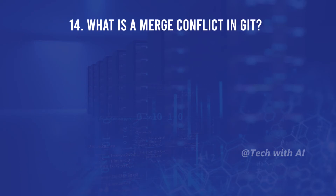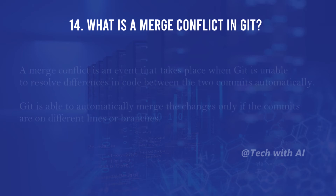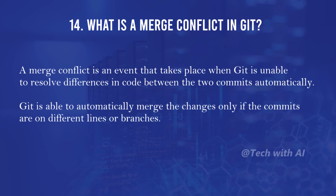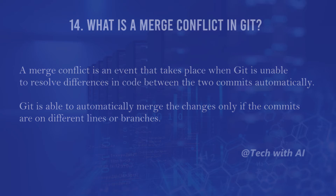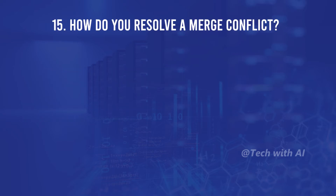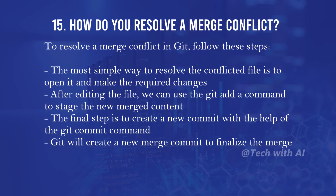What is a merge conflict in Git? A merge conflict is an event that takes place when Git is unable to resolve differences in code between two commits automatically. Git is able to automatically merge changes only if the commits are on different lines or branches.